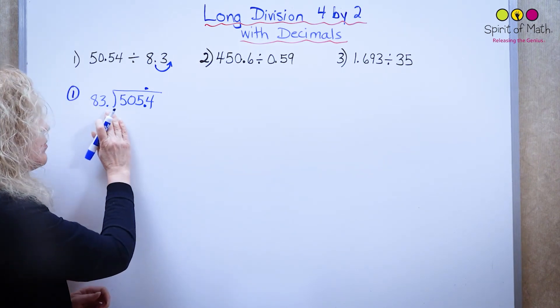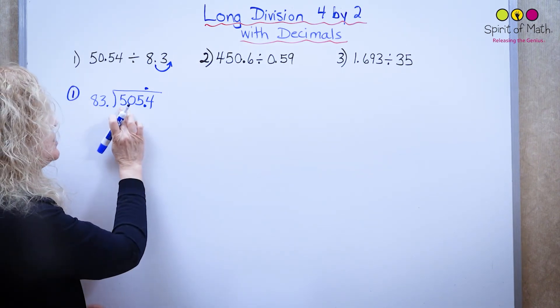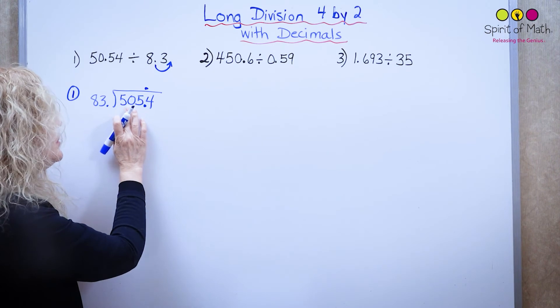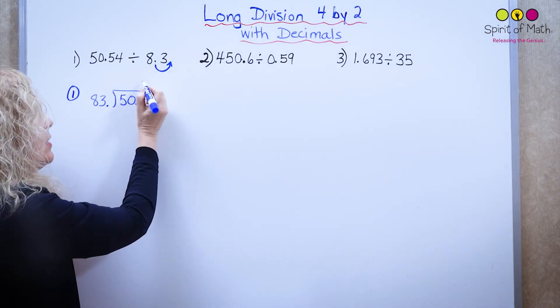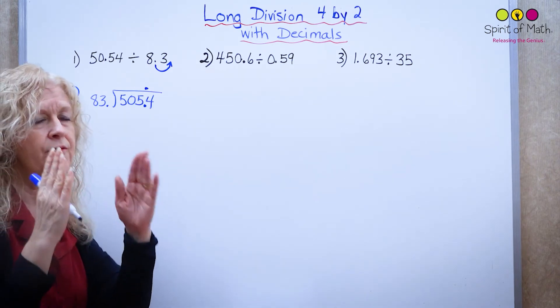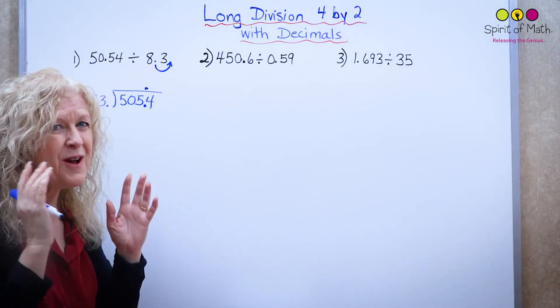So notice I'm doing now 83. I have to put it into 505. I'm not just putting 8 into 50, I'm actually putting 83 into 505. I just did the 8 into 50 so that I could do a guess-timation right away.